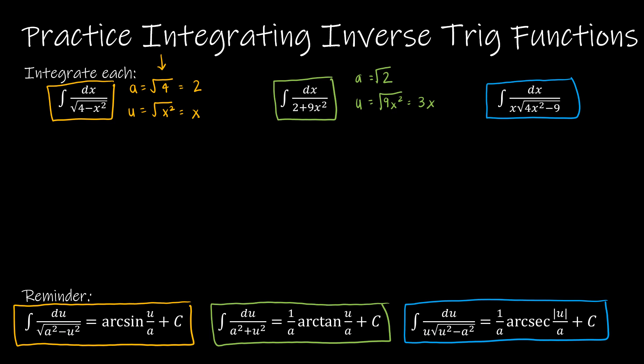For the last function — the blue function — 'a' would be the square root of 9, which is 3, and 'u' would be the square root of 4x squared, which is 2x. So now let's go ahead and get started.